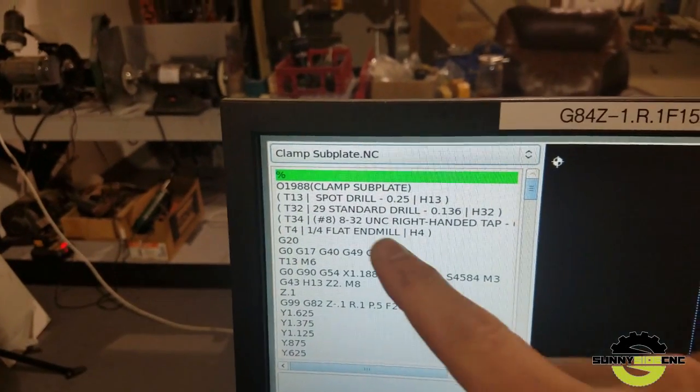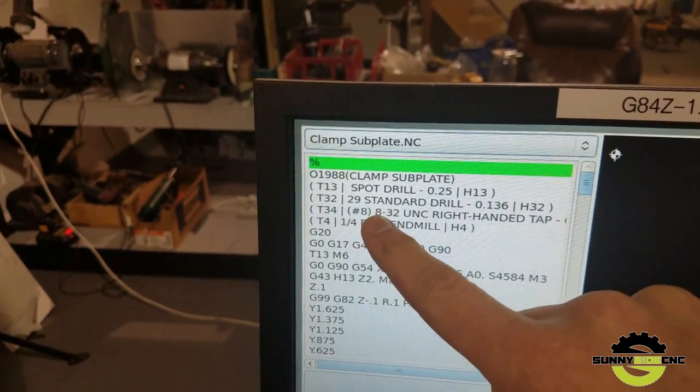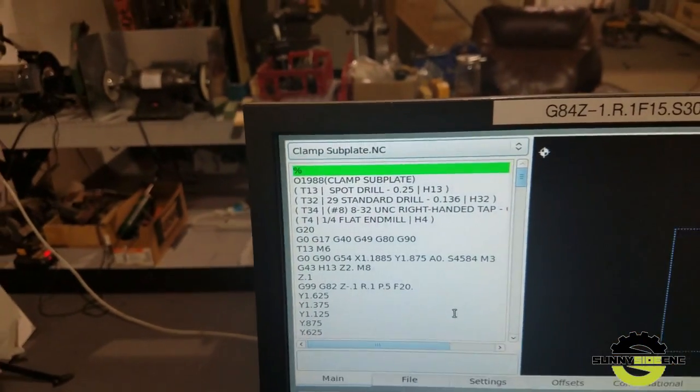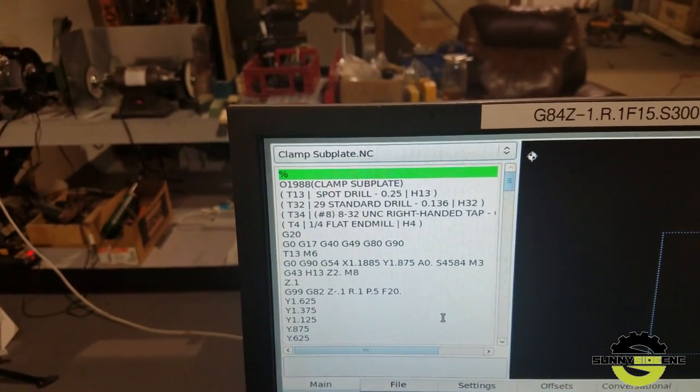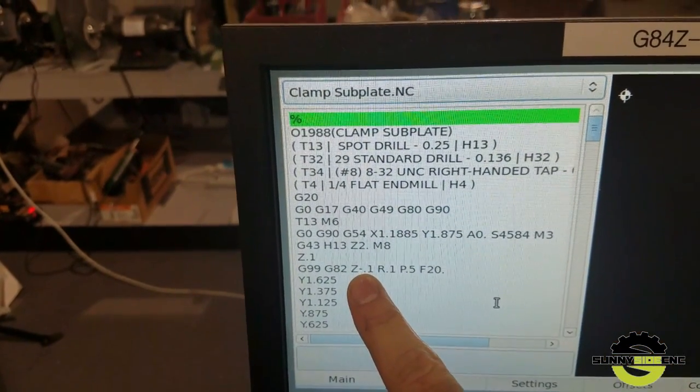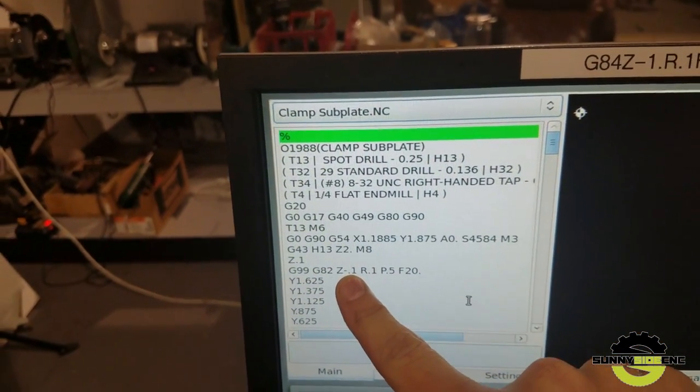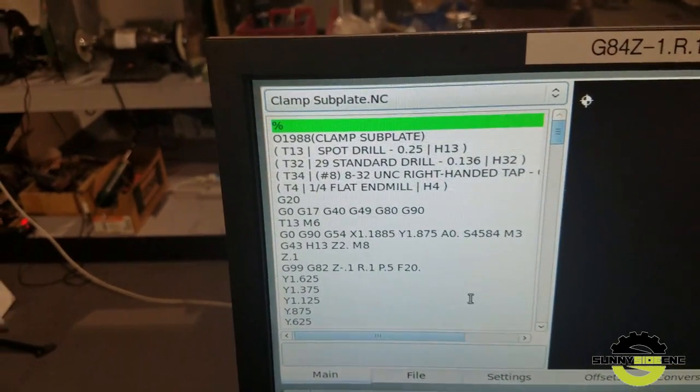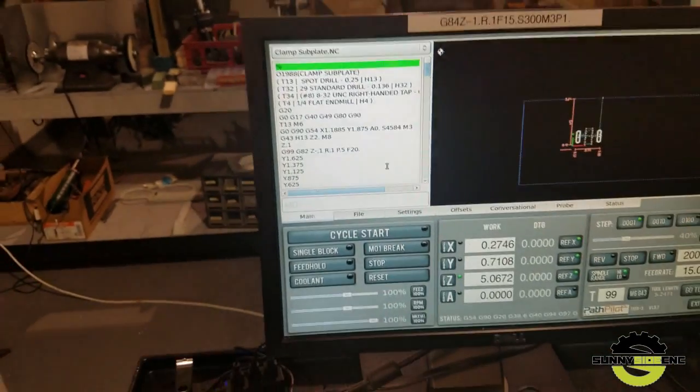We're gonna spot drill, drill, tap 8-32 thread, and then we're gonna mill slot. We're gonna spot drill to a depth of negative 100 thousandths, and there is a reason for it. Why I'm going negative 100 thousandths instead of negative 50 thousandths, let me explain.